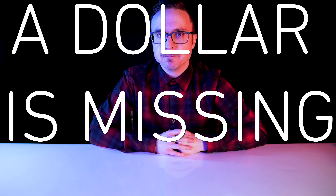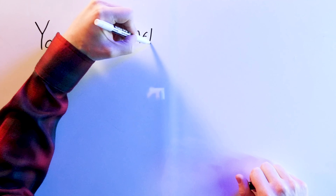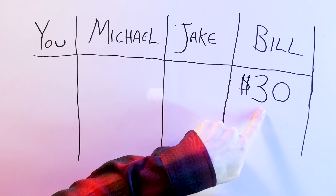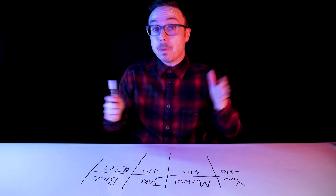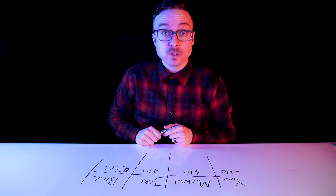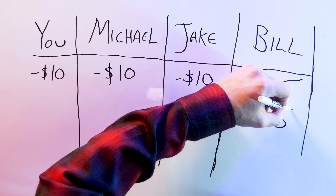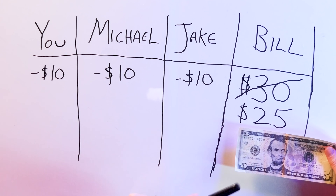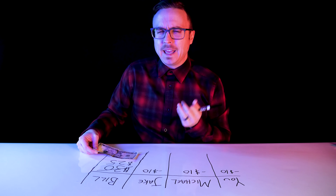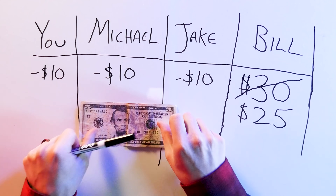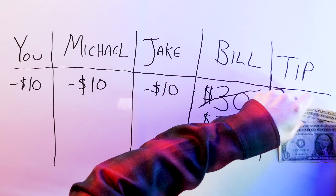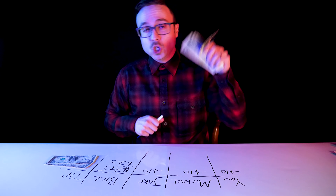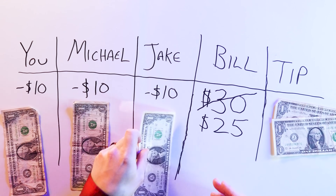In our scenario, a dollar is mysteriously missing. You and your friends Michael and Jake went out to lunch and split the $30 bill evenly — you paid $10 each. But the server accidentally overcharged you, and the bill should have been only $25. So she gives the busboy your $5 refund, but he can't figure out how to evenly divide it amongst three people, and frankly you don't even know you've been overcharged. So he just takes a $2 tip for his efforts and gives you, Michael, and Jake $1 back each.